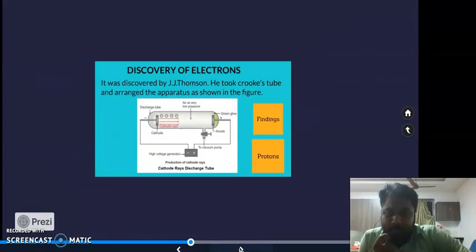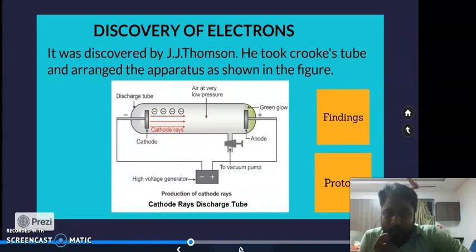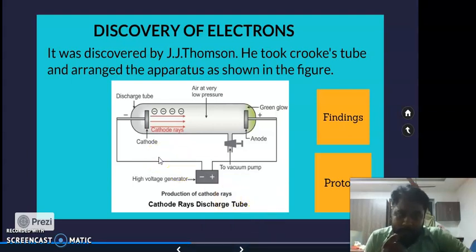J.J. Thomson proved this through an experiment. He conducted the experiment using a Crooke's tube. The figure is shown in the presentation. It consists of a cathode and anode plate. Cathode is a negative terminal and anode is a positive terminal, connected to a high voltage battery.